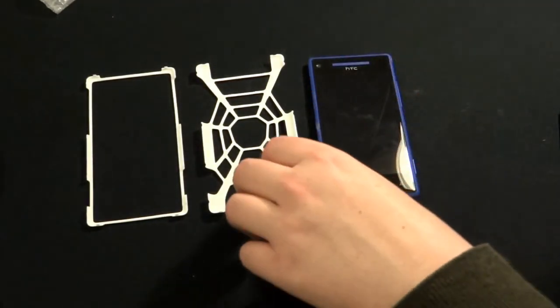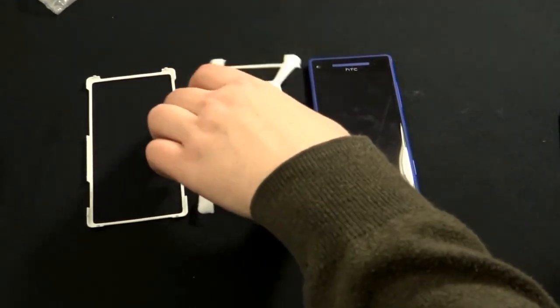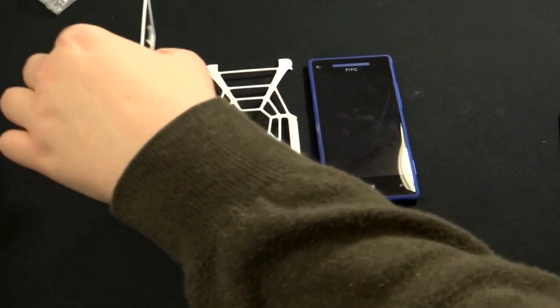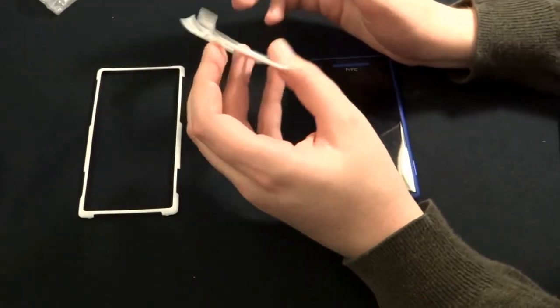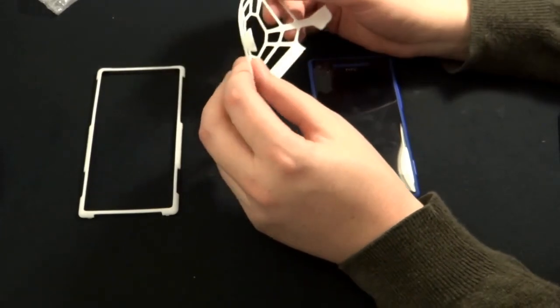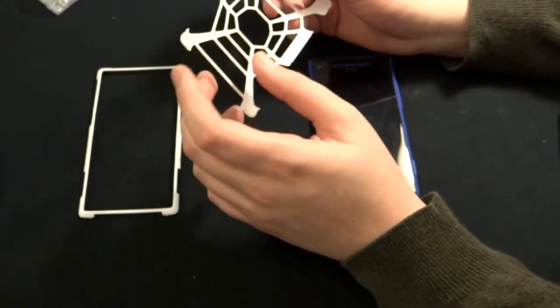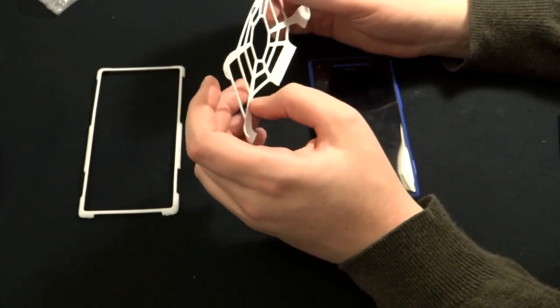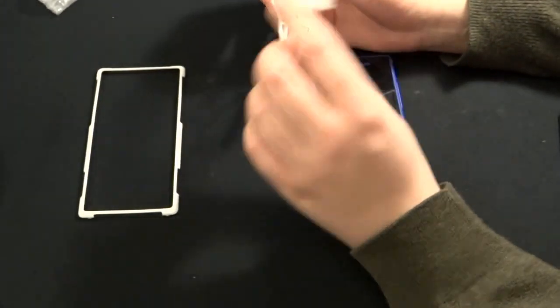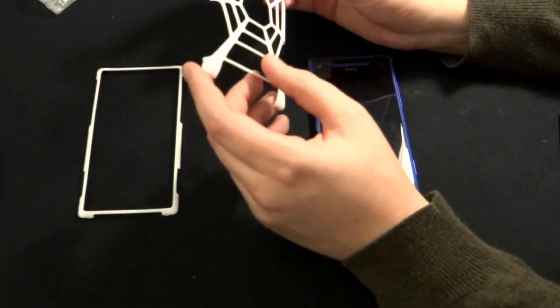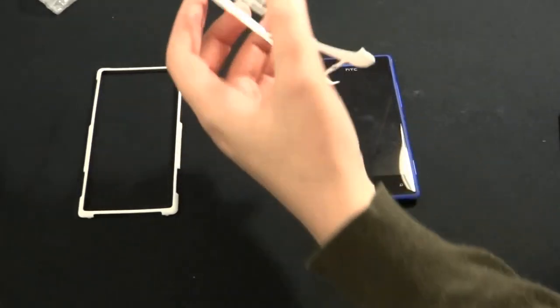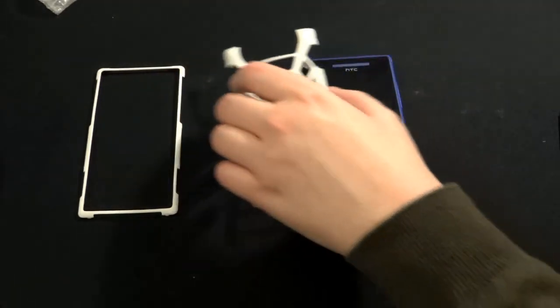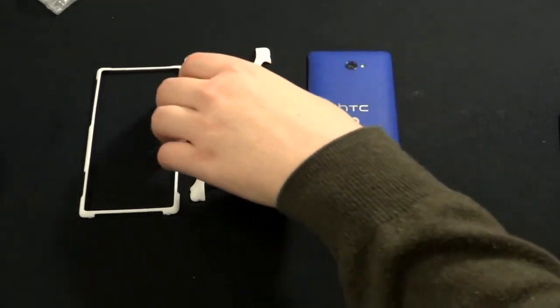But yeah, there we have it. There's the case. It's not bad considering my first attempt at a phone case. But yeah, it's definitely too thin. But you can see how strong the material is. It's flexible, but it's not breaking. It's not snapping. It's very durable material. So I think if I just double the thickness of it, it'll actually work pretty well.